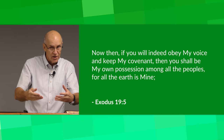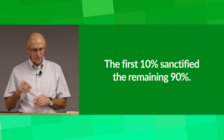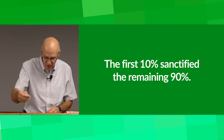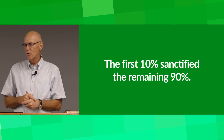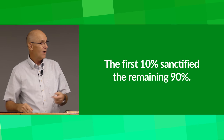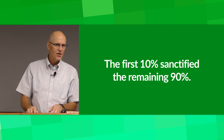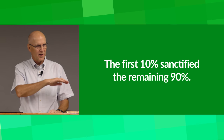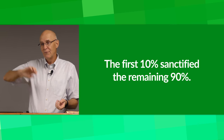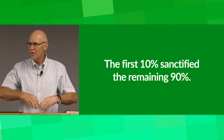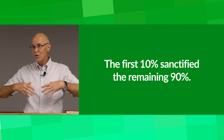By giving ten percent, they acknowledged that everything belonged to God. The Jews understood that by giving the first full portion — ten percent — and acknowledging His ownership, God was then permitting and blessing them in the use and disposal of the other ninety percent. Importantly, ten percent was not considered giving in that sense — it was tax. You had to do that. You hadn't really given Him anything yet.